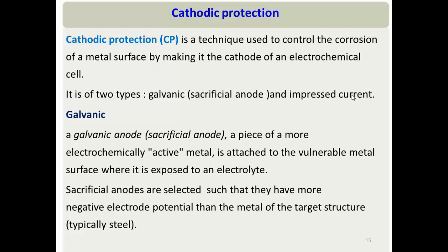Another protection method comes from understanding that the material acting as the anode will corrode. So if we convert the material we want to protect into a cathode, it won't corrode. This is the basis of cathodic protection — controlling corrosion of a metal surface by making it the cathode of an electrochemical cell. There are two types: sacrificial anode (galvanic protection) and impressed current cathodic protection.